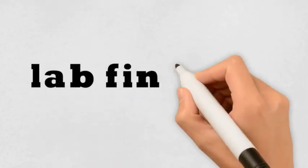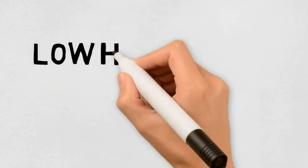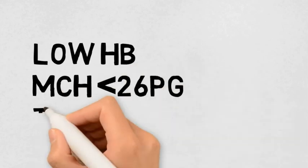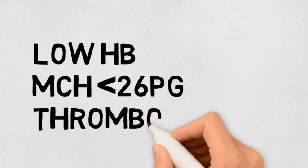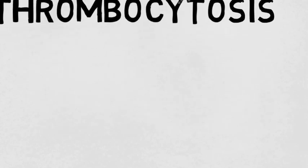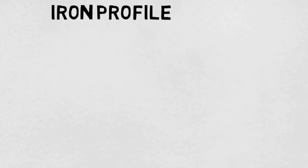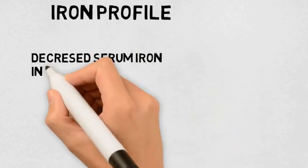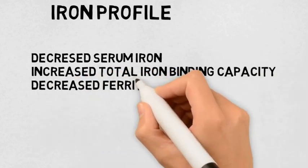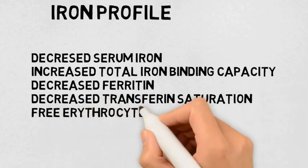To interpret a lab report for iron deficiency anemia: check for low hemoglobin, MCH less than 26 picograms (normal MCH is 27–30 picograms), and thrombocytosis in chronic iron deficiency anemia. For the iron profile: decreased serum iron, increased total iron binding capacity (TIBC), decreased ferritin (stored ferritin is decreased), and decreased transferrin saturation — no iron means no transferrin saturation.